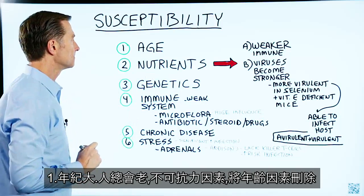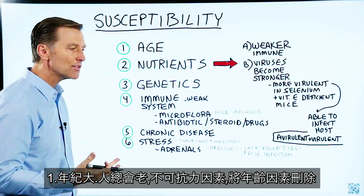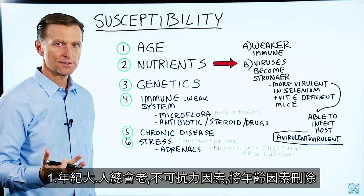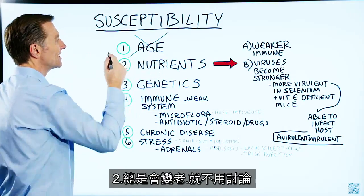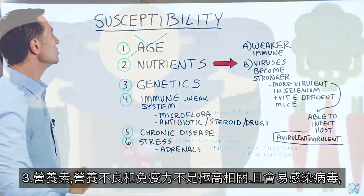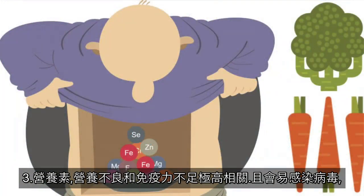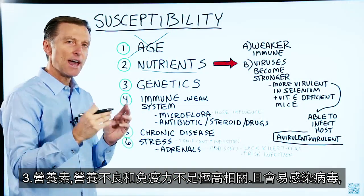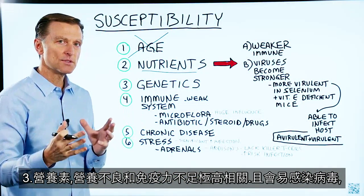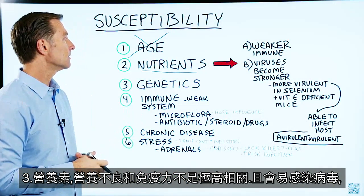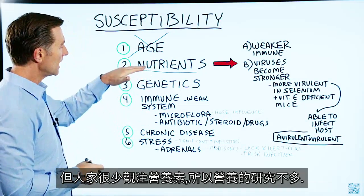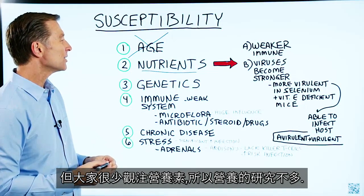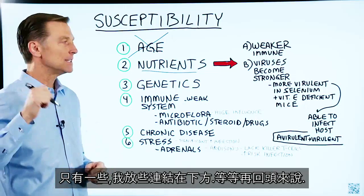Age is one factor. There's nothing you can do about getting older, so let's cross that out. Nutrients — nutrient deficiencies: there's a huge connection between nutritional deficiencies and the health of your immune system and susceptibility to viruses, but there's not a lot of focus on this area. There is some research, which I've linked below.